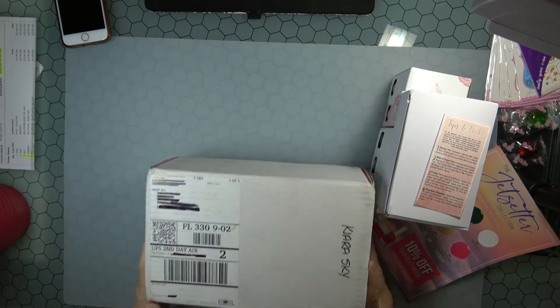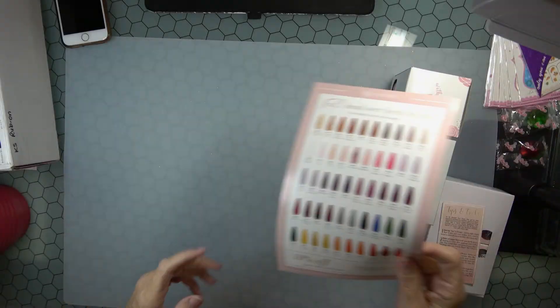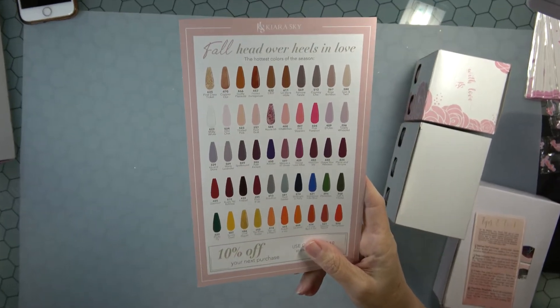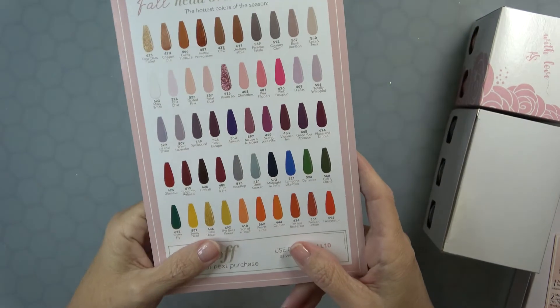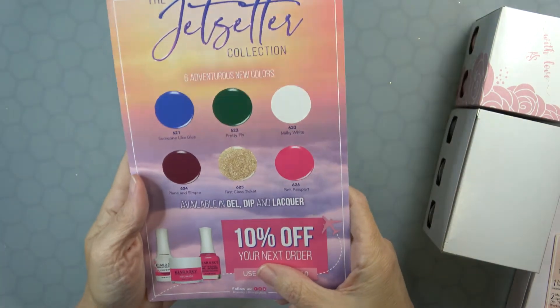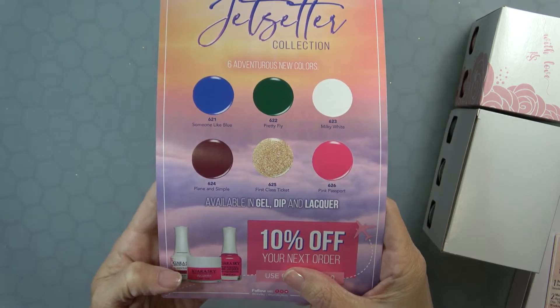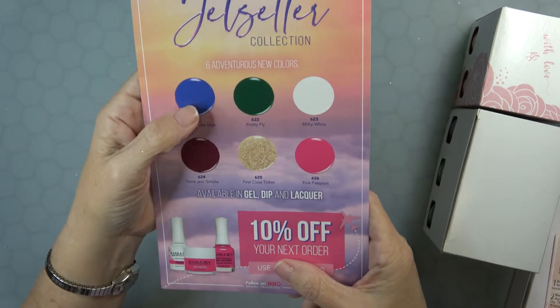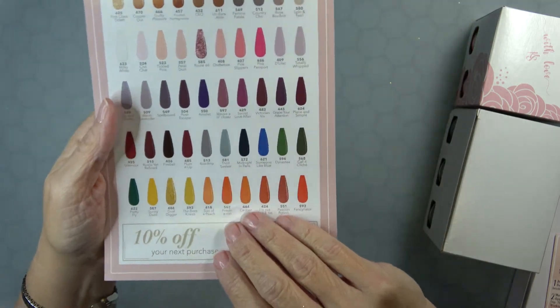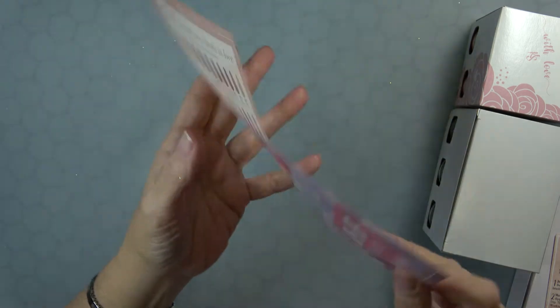First off, it comes with this color chart that shows all of the different dip powder colors that they have. Look at how many they have, that's fantastic. They have their base, their gels, their nail lacquers, dip powders. It says right here, available in gel, dip, and lacquer. So every one of these colors is available in either a gel color, a dip powder, or a regular nail polish lacquer. That's fantastic.